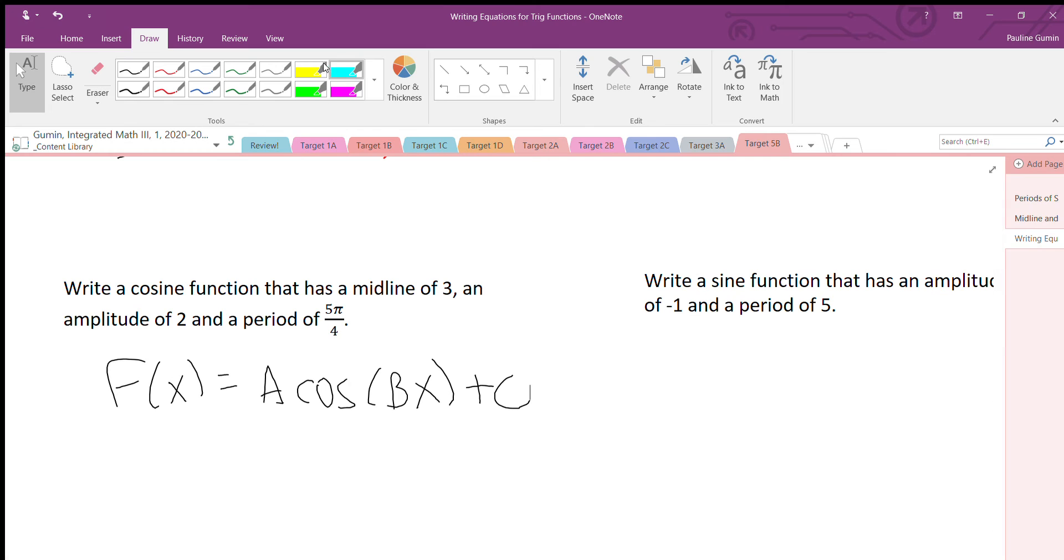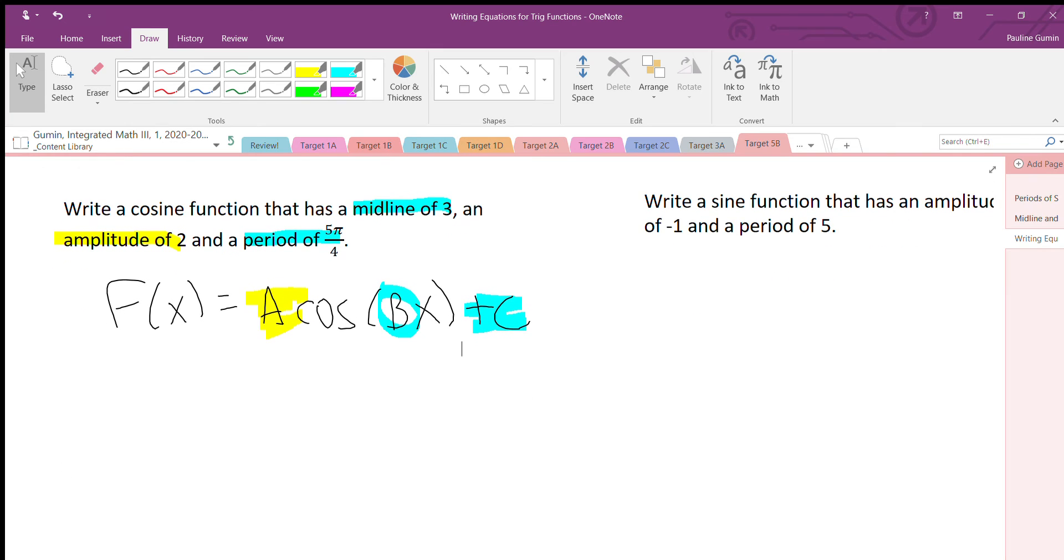Let's see. A is my amplitude. I'm going to use the period here, although I have to do some math with it. And of course, I have my midline of 3. First, I'm going to find the B value, because that's the only part I can't just plug in. So let's do that. 2π, so let's write B equals 2π divided by my period.